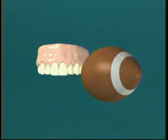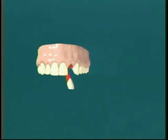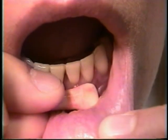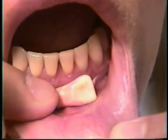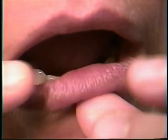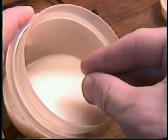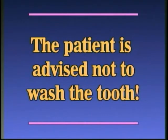An avulsed tooth is a tooth which has been knocked right out of its socket as a result of trauma. The doctor will usually ask the patient to try to replace the tooth in the mouth if he or she is comfortable doing it. Otherwise, the dentist may advise the patient to place the tooth just inside his or her lips, or into a jar of milk, and come right over to the office. The patient is advised not to wash the tooth.